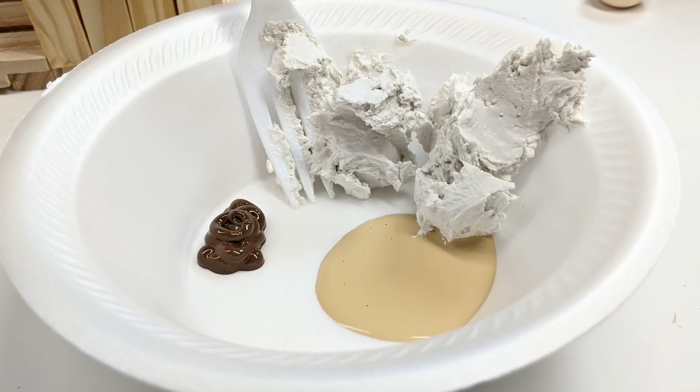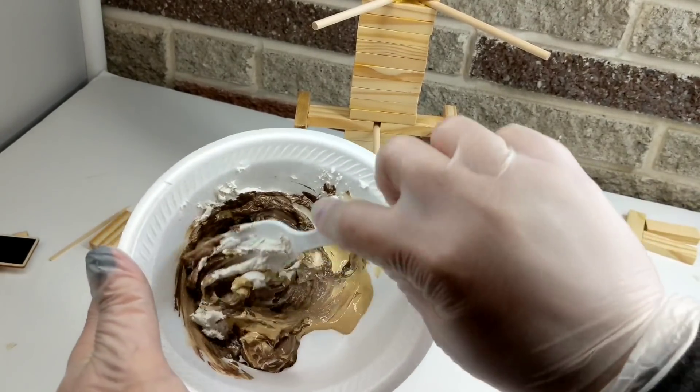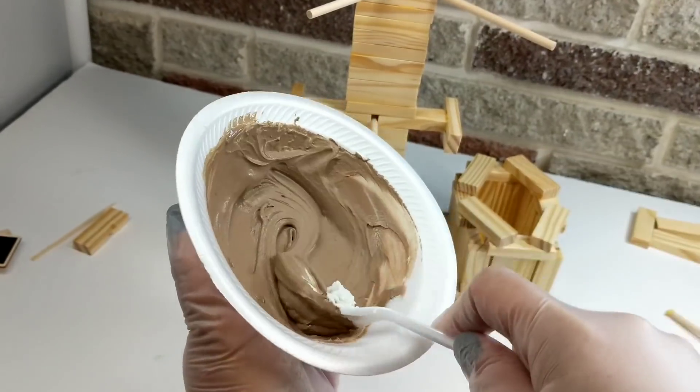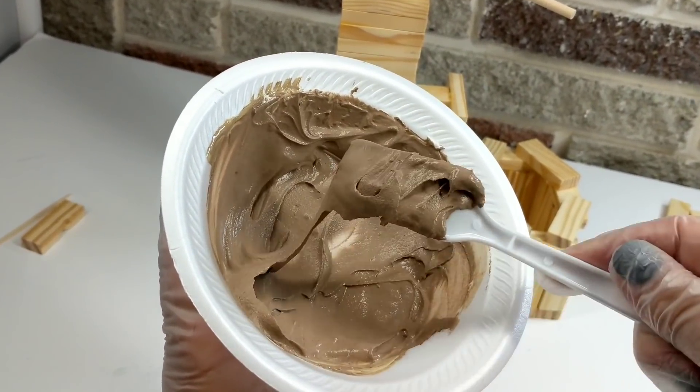But, here's the fun part. We're going to take some joint compound and some paint. Take whatever color paint you want, and whatever kind of joint compound you want to use, and you're going to want to mix it together until it looks all nice and creamy.